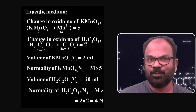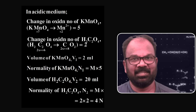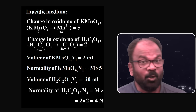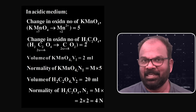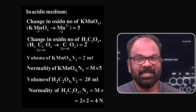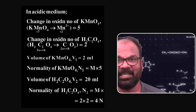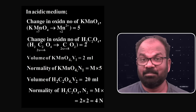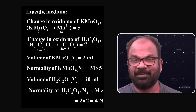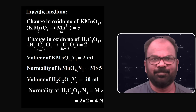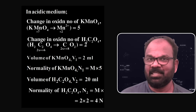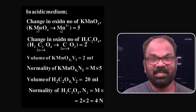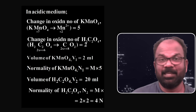It is given that the volume of KMnO₄ solution required for the titration, V1, is equal to 2 ml. The normality of KMnO₄ solution, N1, is equal to its molarity M multiplied by X, where X is the change in oxidation number or N-factor. Here, for KMnO₄, the change in oxidation number is 5. Therefore, its normality N1 is equal to molarity M × 5.